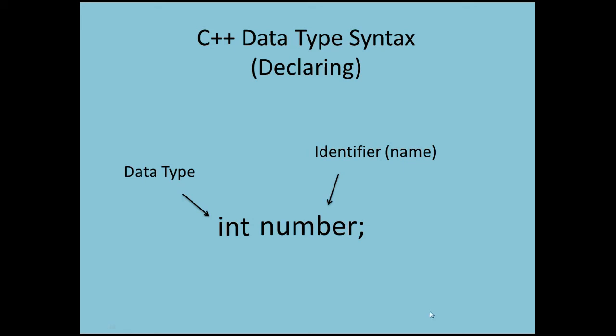In this case, we have an integer named number. So anytime I want to access this integer, I just refer to it by number and it will make a lot more sense once we actually see it in code. But the important part to see here is when you declare something, you declare it by its data type and then you give it a name. Don't forget to end it with your semicolon. That's pretty much all there is to it when it comes to declaring.